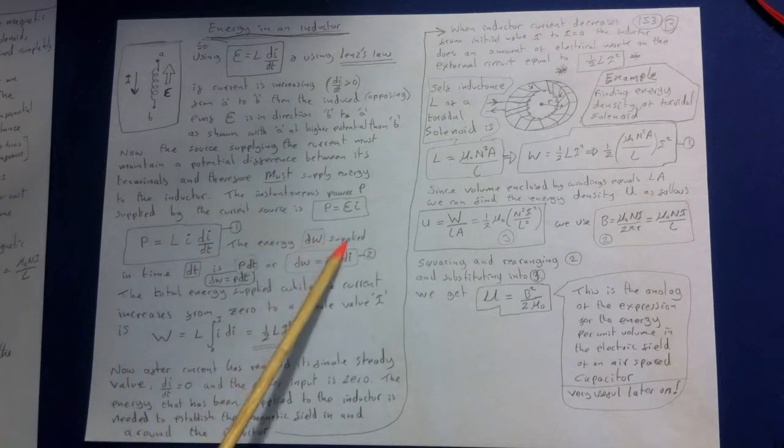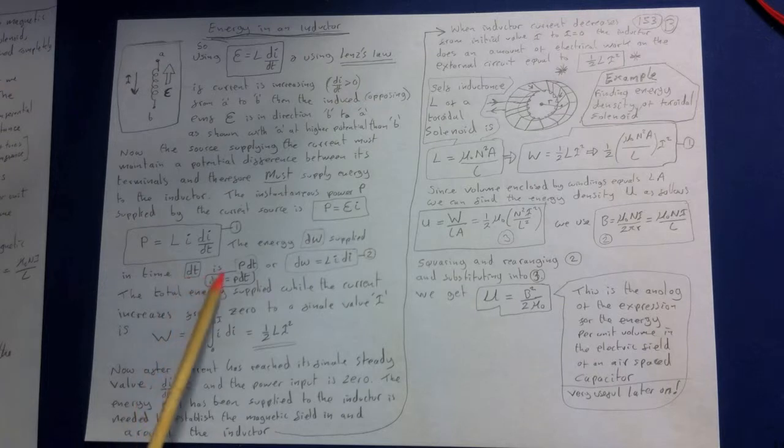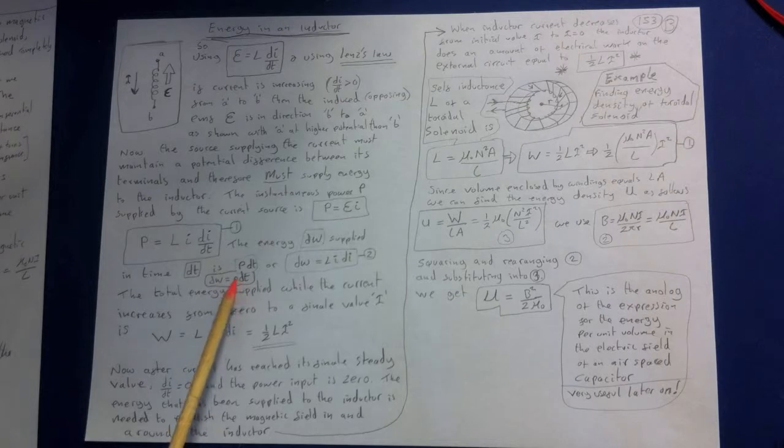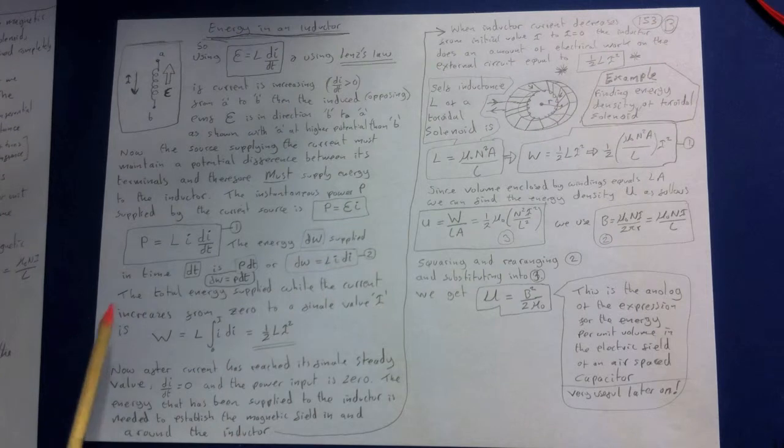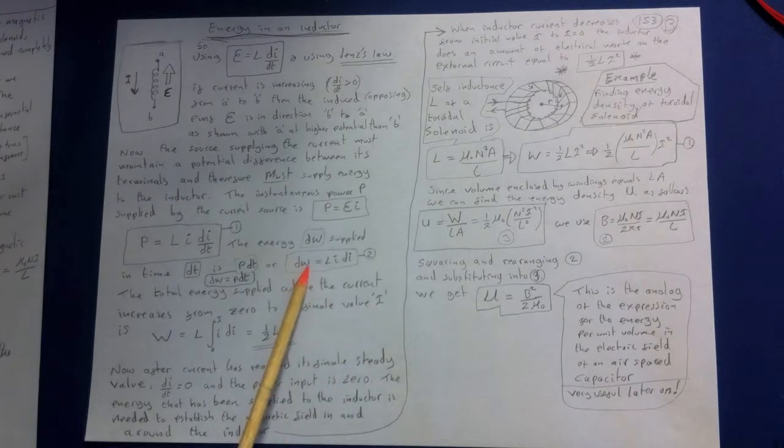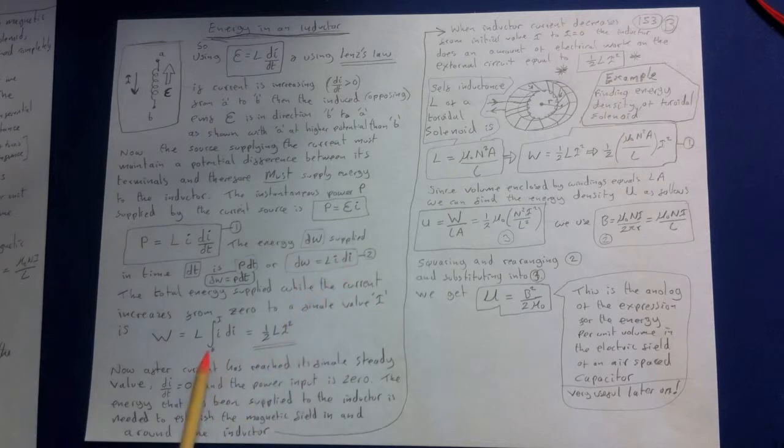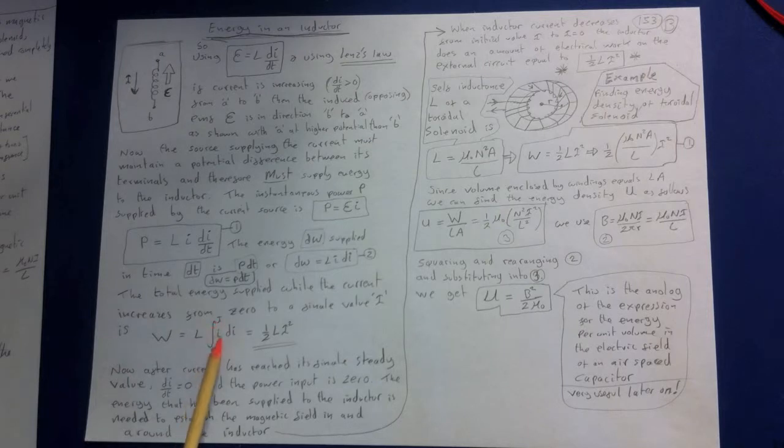So the energy dW supplied in time dt is simply P dt, which is a little bit of the energy times the power multiplied by the time. Then we end up with this equation number two. Now the total energy supplied while the current increases from zero to a final value i, we'll sum up all these little energy parts throughout the whole of the change in i here. And so we can just take the integral of that side and then form the integral of 0 to i on this side.